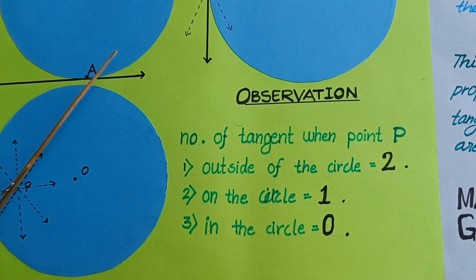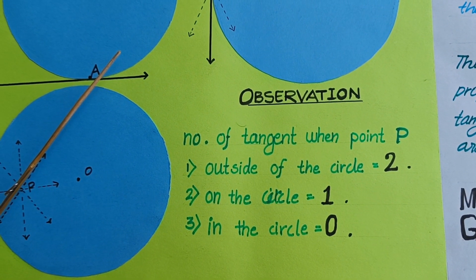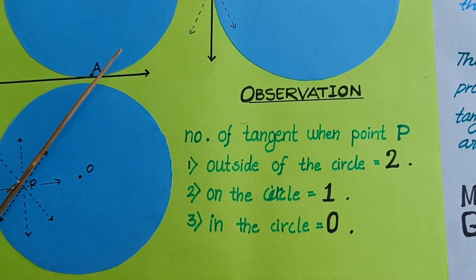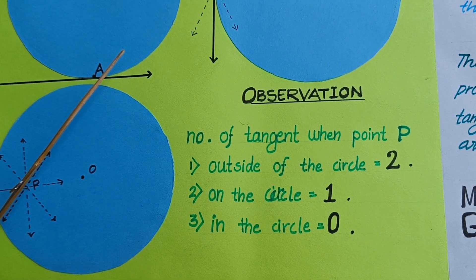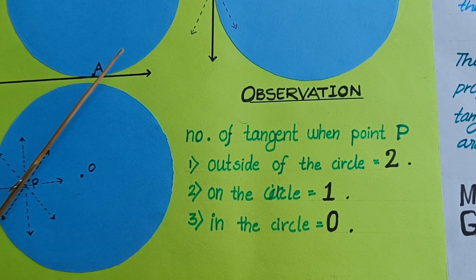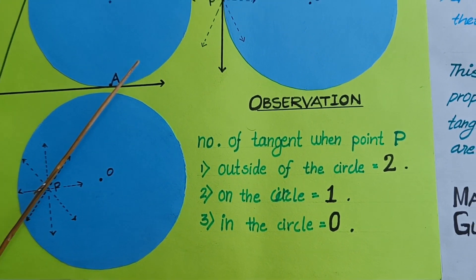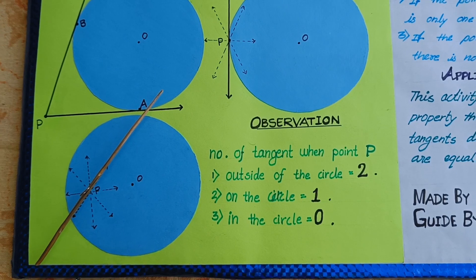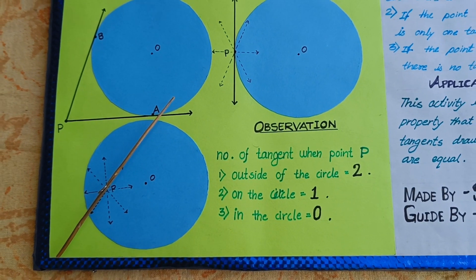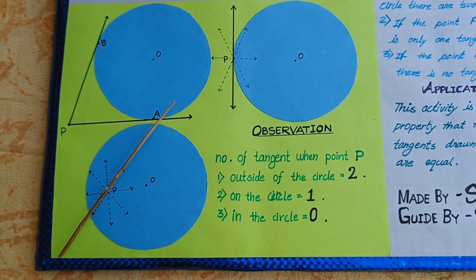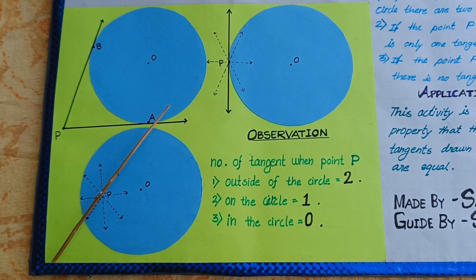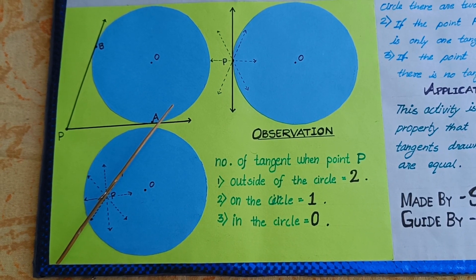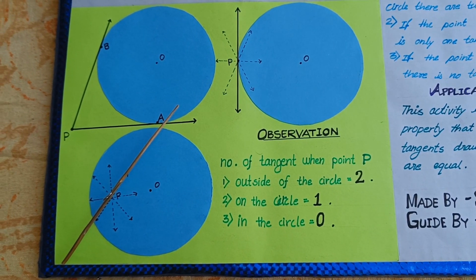The observation of this activity: the number of tangents when point P is outside the circle is two; when point P is on the circle, it is one; and when point P is inside the circle, the number of tangents is zero.